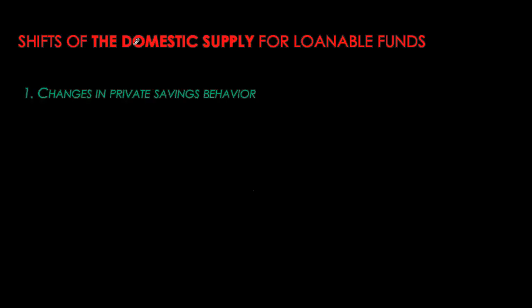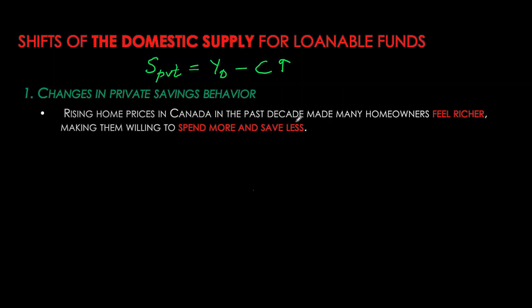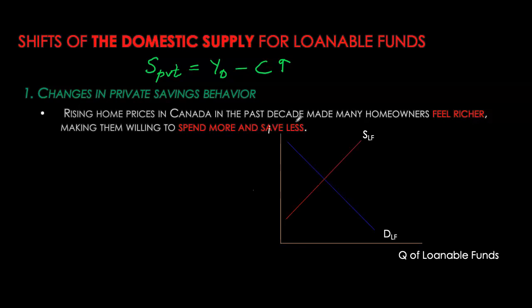On the supply side, we look at different factors affecting the supply curve for loanable funds. Supply comes from savers — both households and government public savings. Changes in household consumption behavior automatically lead to changes in saving behavior. Private savings equal disposable income minus consumption. Anything causing households to consume more reduces savings; anything increasing household income, holding everything else constant, will increase private savings. For example, higher home prices in Canada make people feel richer, so with the same income they spend more and save less, causing the supply curve of loanable funds to decrease and shift left.